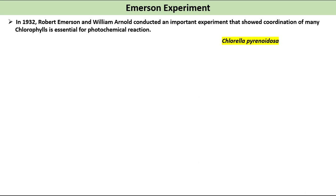Emerson used Chlorella pyrenoidosa as an experimental organism. It is an oxygenic organism. He exposed a suspension of the green alga Chlorella pyrenoidosa to a brief flash of light for 10 microseconds. He recorded no evolution of oxygen molecule.